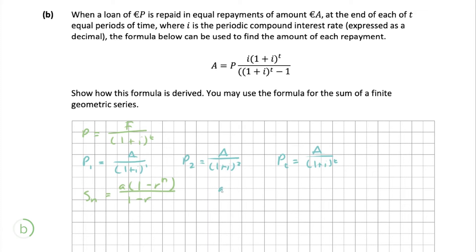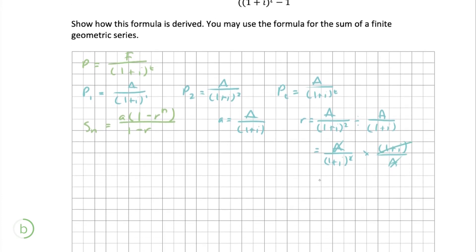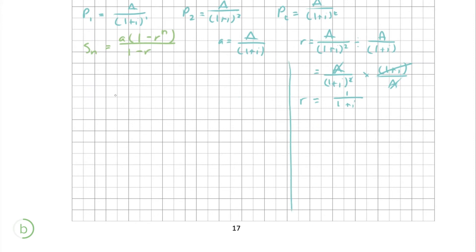Before substituting, we need to find our values. The first term a is a over (1 + i). For the ratio r, we divide the second term by the first — dividing fractions means multiplying by the inverse. The a's cancel and one of the (1 + i)'s cancels, giving us r = 1 over (1 + i).